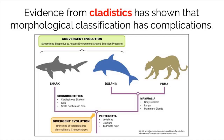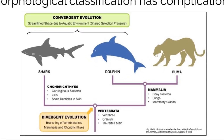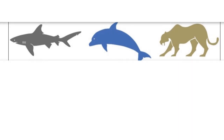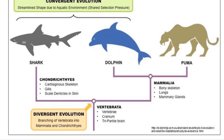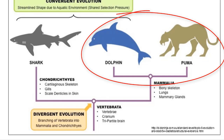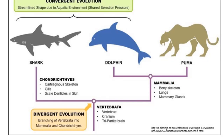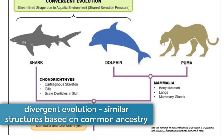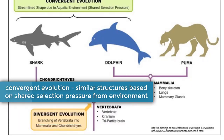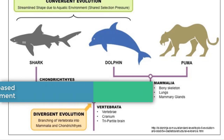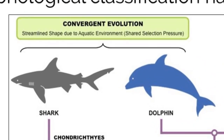Evidence from cladistics has shown that comparing organisms by morphology or by structures alone has complications. If you remove the cladogram and look at the structural similarities of these organisms, you might assume that the shark and the dolphin are more closely related to each other than to the puma. But when you introduce a cladogram based on structural and sequence evidence, you will find that the dolphin and puma are more closely related to each other than to the shark. This can happen because of two different types of evolution: divergent evolution shows structural similarities based on common ancestry, while convergent evolution shows similar characteristics because of selective pressures in the environment. The shark and the dolphin have similar structures not because they are closely related, but because they live in similar aquatic environments where similar structures are selected for, which is due to convergent evolution.